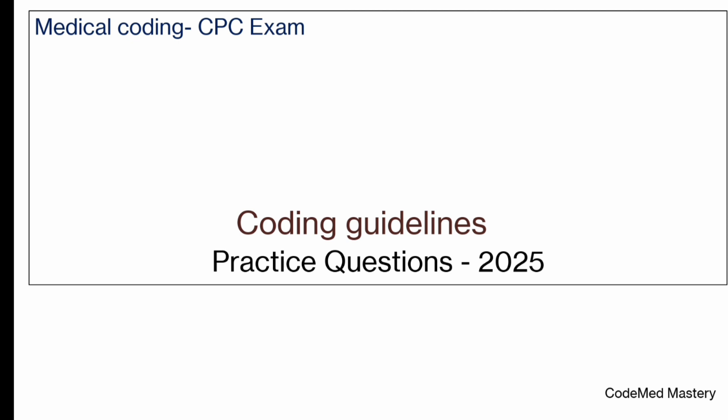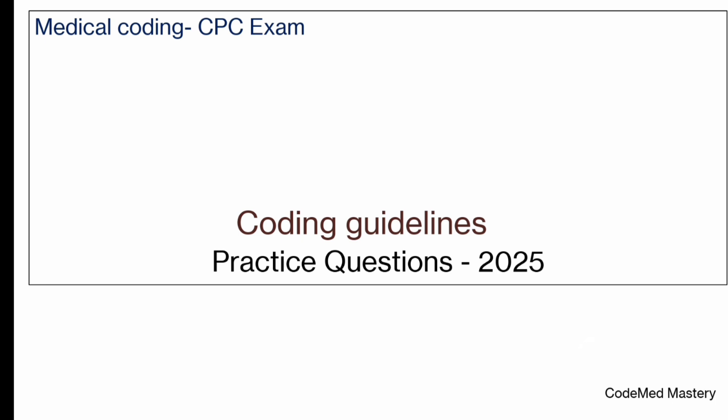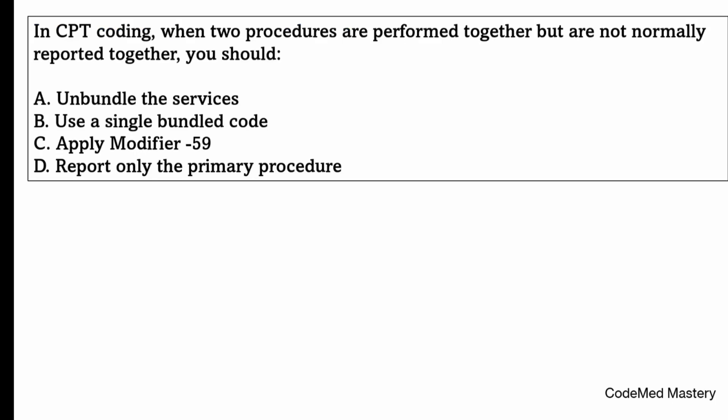Let's start with the first question. Before that, don't forget to support my channel by liking and sharing this video and also subscribing. This is the first question: in CPT coding, when two procedures are performed together but are not normally reported together, you should — option A: unbundle the services; option B: use a single bundled code; option C: apply modifier 59; option D: report only the primary procedure.